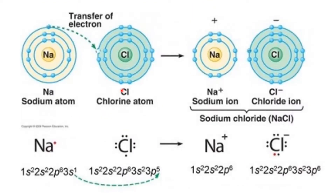Let's see how a compound is formed. Sodium has 11 electrons with configuration 1s2, 2s2, 2p6, 3s1, so the outermost shell contains 1 electron in the 3s orbital. Chlorine has 7 valence electrons because its configuration is 1s2, 2s2, 2p6, 3s2, and 3p5, so the outermost shell has 3s and 3p orbitals, giving a total of 7 electrons.